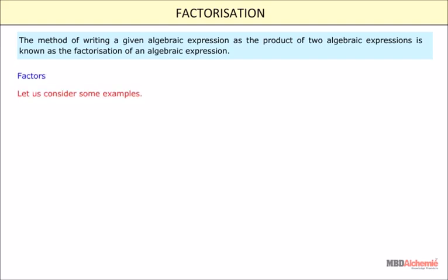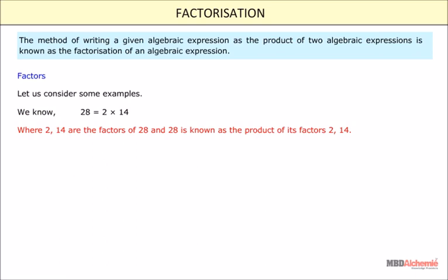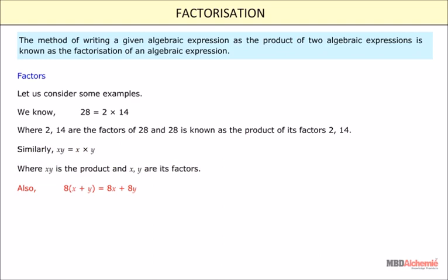Factors. Let us consider some examples. We know that 28 is equal to 2 into 14, where 2 and 14 are the factors of 28, and 28 is known as the product of its factors 2 and 14. Similarly, xy is equal to x into y, where xy is the product and x and y are its factors. Also, 8 into x plus y is equal to 8x plus 8y, which clearly shows us that 8 and x plus y are the factors of 8x plus 8y.